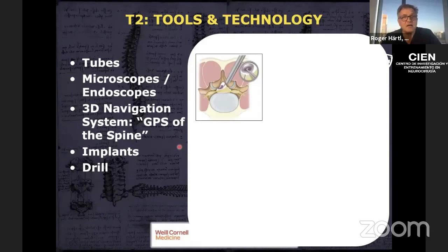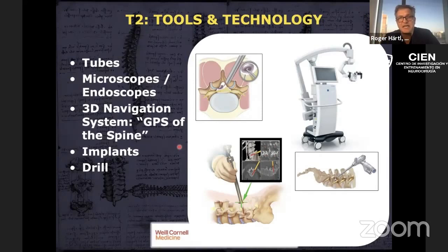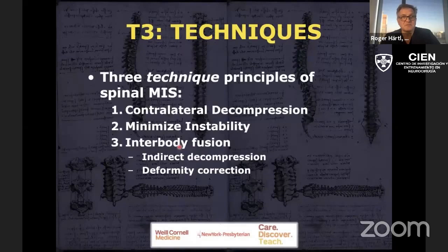Now we're talking about the second T, which is tools and technology: the microscope, navigation, pedicle screws, expandable cages. Those are all great things and you've got to be able to use those. No lasers for the most part.